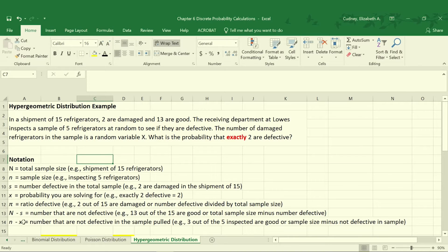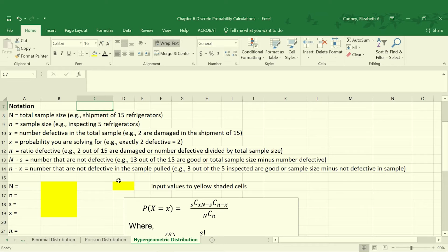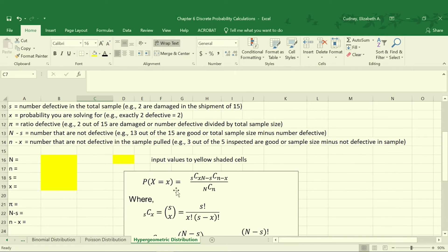We're also going to calculate N minus S. That's looking at the number that are not defective. And N minus lowercase n minus X, and those are the number that are not defective in the sample pulled. In this example as well, I have the calculations in here. And you'll see me change the font color. Because as you'll notice, the calculations can be pretty difficult.